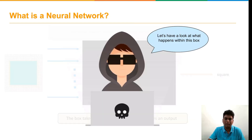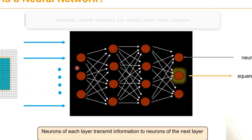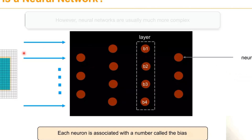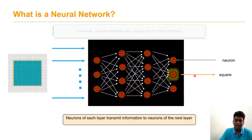Inside that box, various layers are available. The neurons present in each layer transmit information to nearby neurons and on to the next layers, finally reaching the output. Every neuron is associated with some bias function. For every data received, a weight is assigned and transmitted to the next hidden layers, and finally the output is predicted in the last layer.